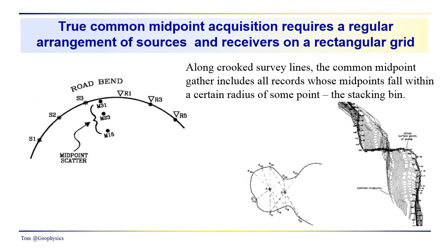You can see a much more complex example here. Here's a bend in the road, and you can see where different source receiver combinations at completely different places along the road give you information from a common midpoint.